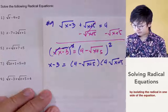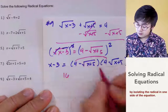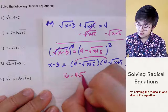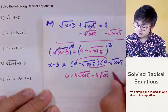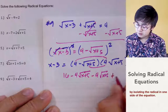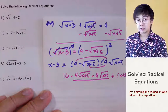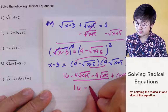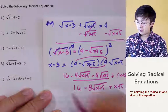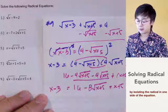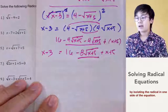Squaring both sides: the left side simplifies to x minus 3. For the right side, we FOIL out 4 minus square root of x plus 5. We get 4 times 4 is 16, then 4 times negative square root of x plus 5 is negative 4 root of x plus 5 twice, and square root of x plus 5 squared is x plus 5. Combining like terms gives 16 minus 8 times square root of x plus 5 plus x plus 5, all equal to x minus 3.